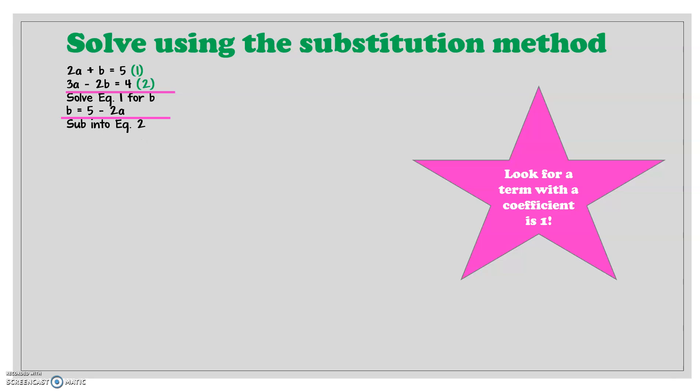Now I'm going to substitute that into equation 2. So 3a minus 2 times 5 minus 2a equals 4. Now, what I want to say, and I know a lot of students sometimes make this mistake. Be very careful at this point where you're removing brackets. Because you want to multiply each term inside the brackets by a negative 2. So that's not just 2, but it's in fact a negative 2 that you're multiplying by.